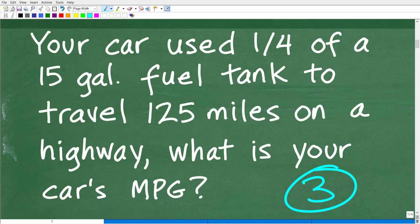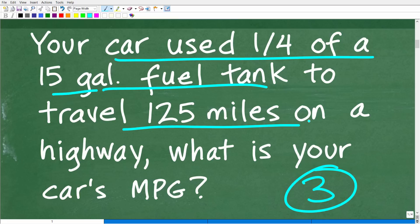Now, here we have this car. We have this fuel tank involved. It used some of the fuel, it used a quarter of the fuel in the fuel tank. It's a 15-gallon tank. It traveled 125 miles, and we're looking for this MPG. So how can we kind of visualize this problem? Well, you can do it by just a simple sketch.